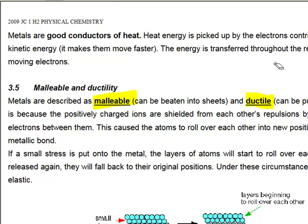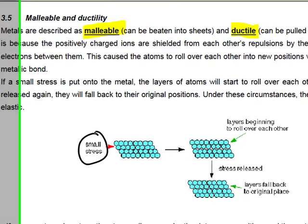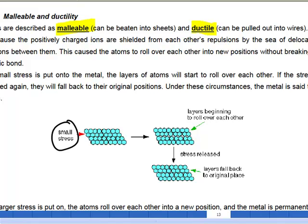The final property that we are going to talk about in this video is that metals are very malleable and ductile. To understand this, let's look at the structure. When I apply a very small stress on the structure of the metal, the metals are free to roll over each other. Because the mobile sea of electrons actually shield the cations from each other and they are able to roll over each other without breaking the metallic bond.